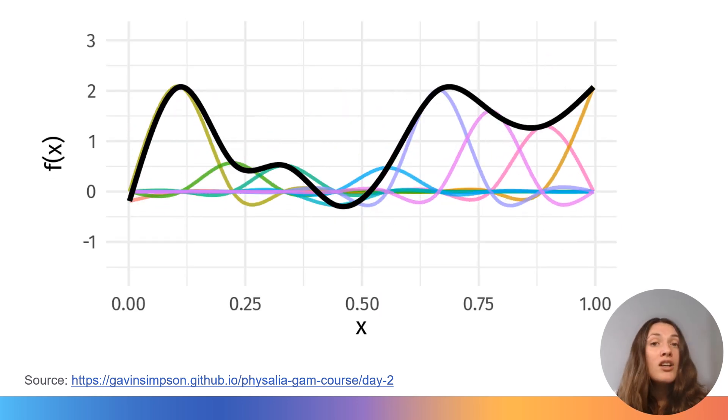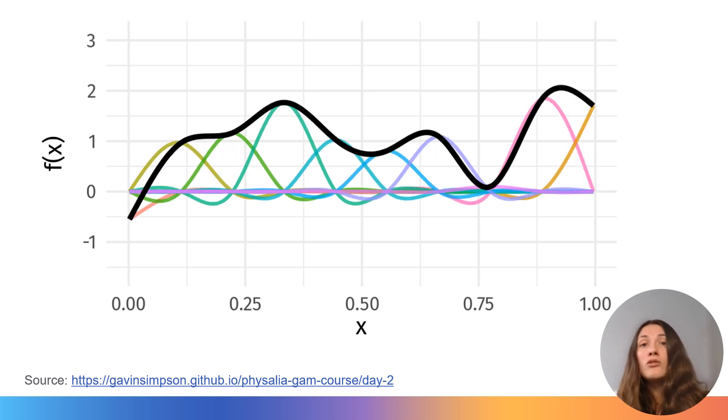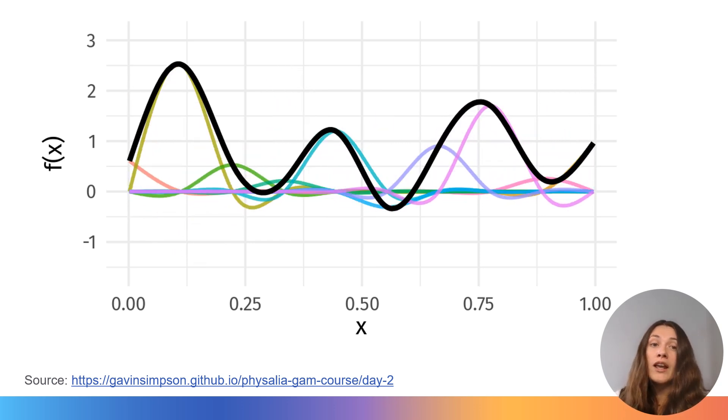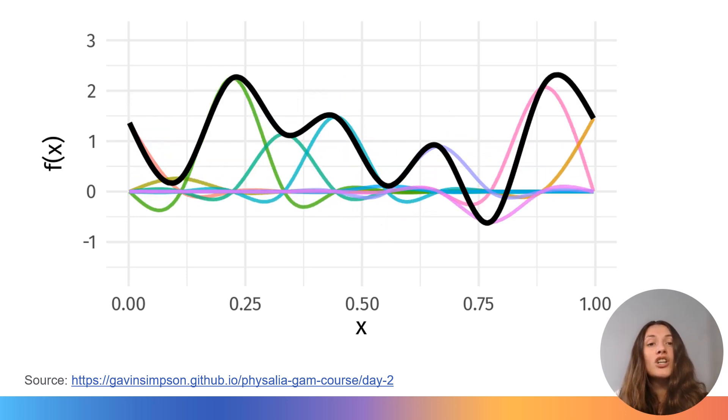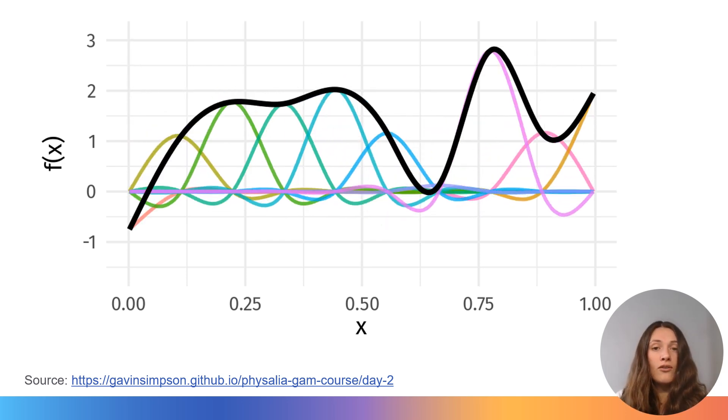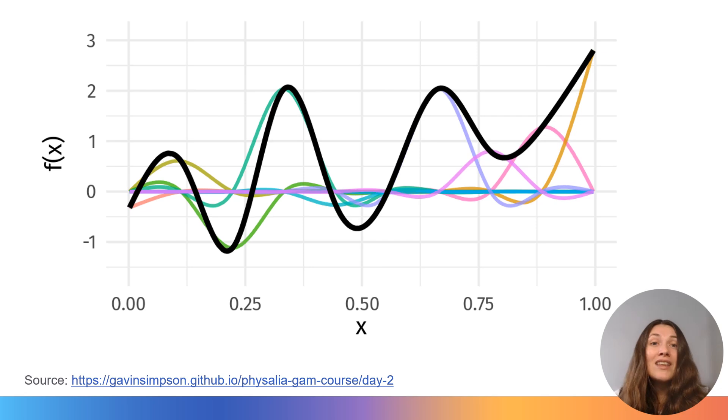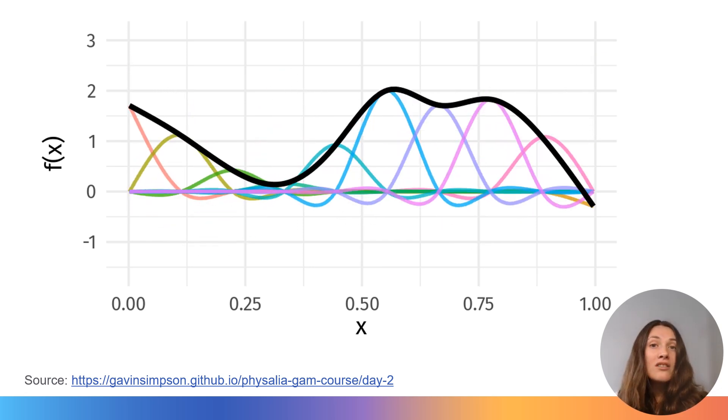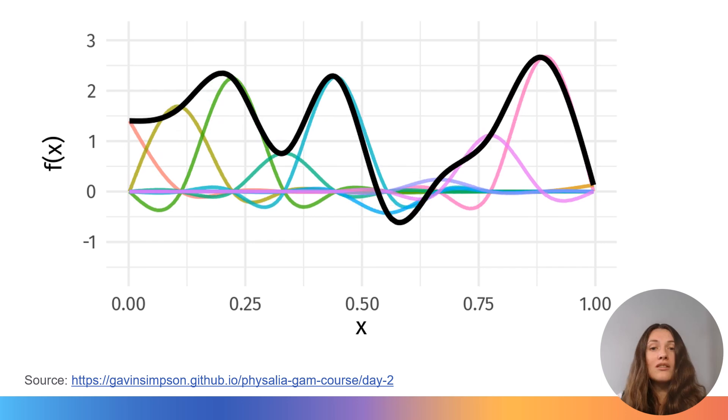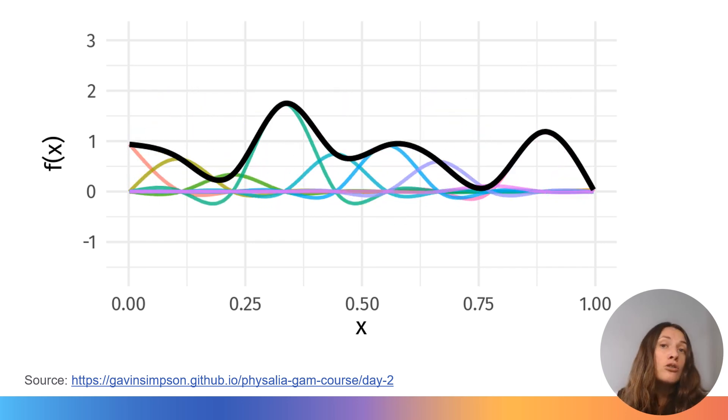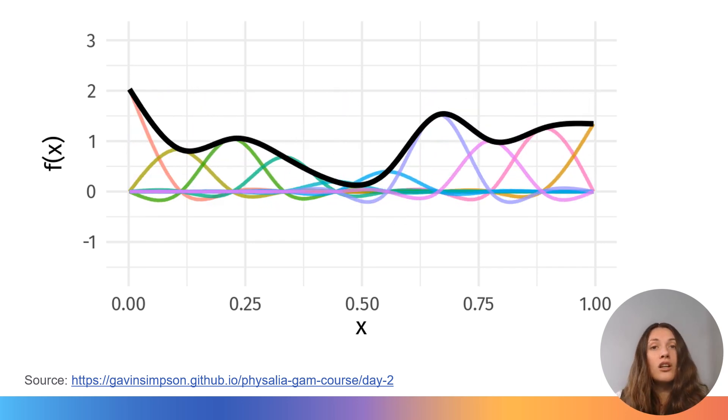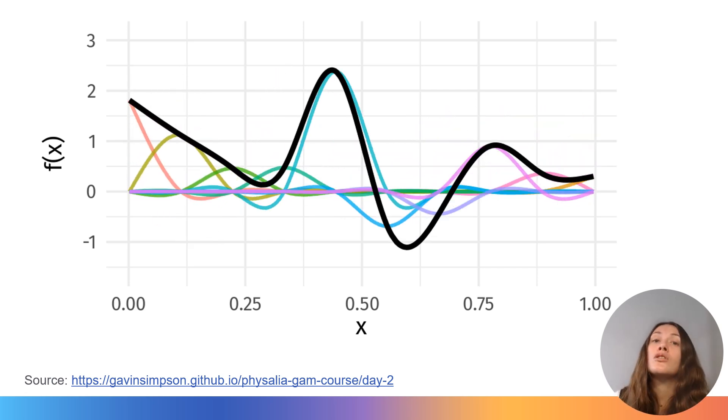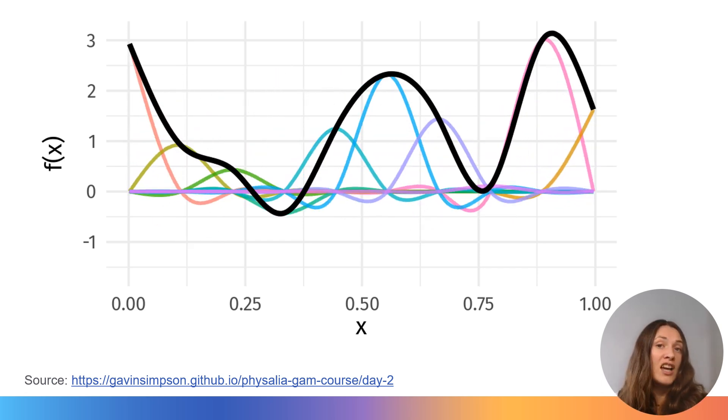The animation on screen shows how different combinations of the cubic basis function that we saw earlier and different estimates of the coefficients can change the shape of the curve. As you can see, the nature of this relationship completely changes across different combinations of coefficients. That means I could use the exact same basis function across many different situations and different sets of data, but produce completely different relationships.